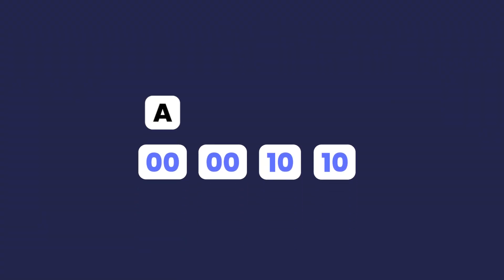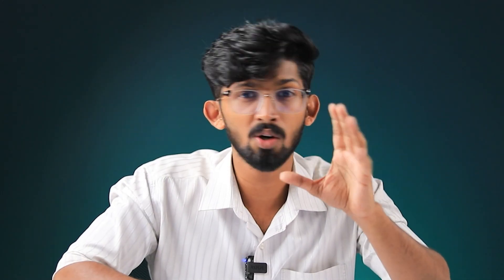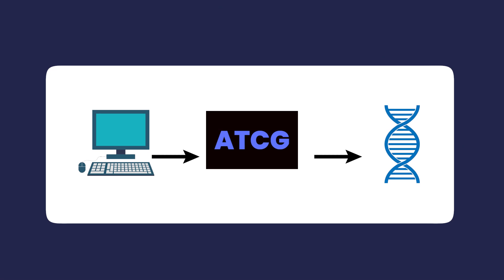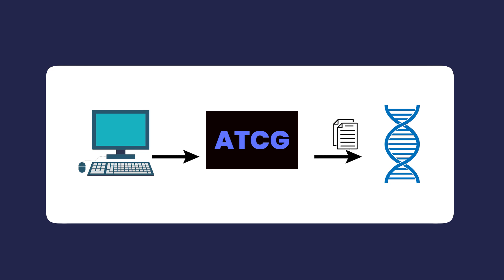Now you can see that we can save this — this is the value. We can transfer this ATCG to our DNA. The value is 10. If you divide this 10 into the minor numbers, we can save this as ATCG.